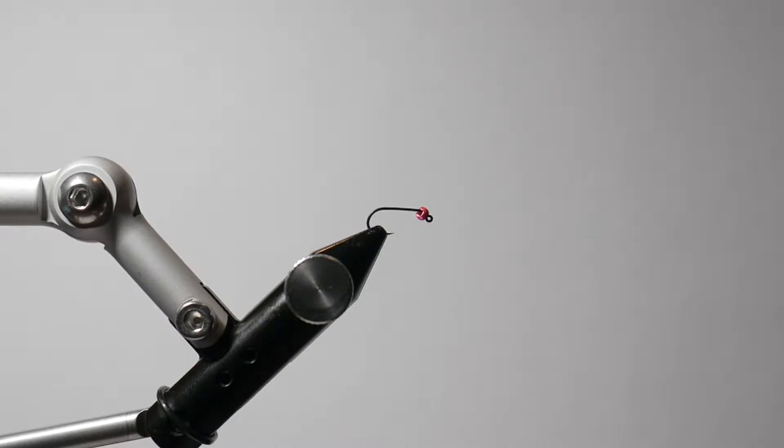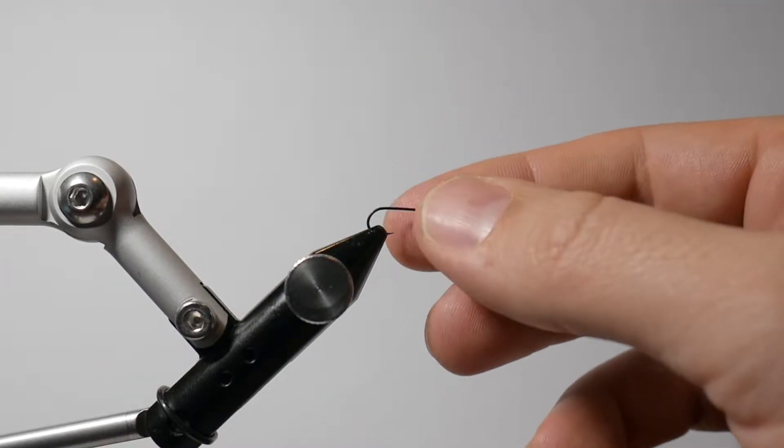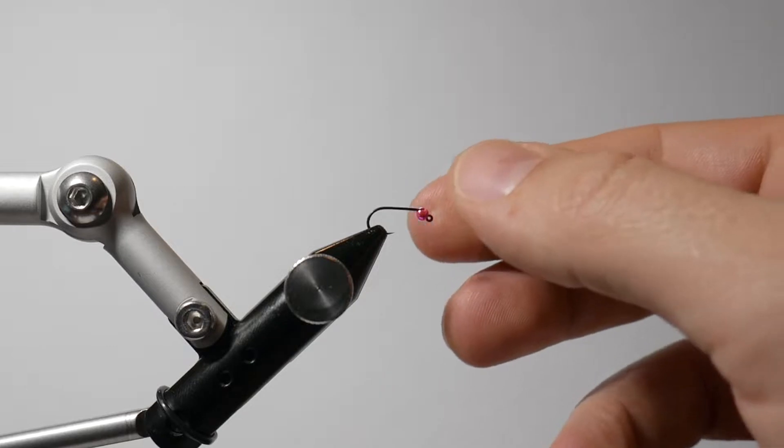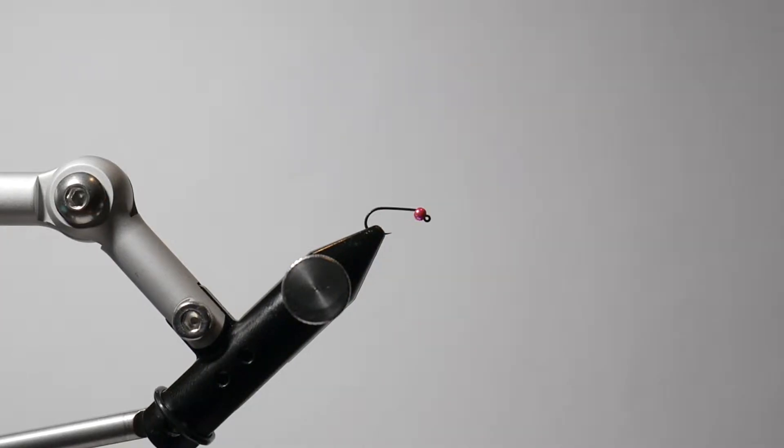I wanted to tie one that was fairly unique in pink because John, who fishes on the channel a lot, he's a big pink fan. So I'm going to start with a Veevus 30M body quill, this is the BQ12, but it's basically just a pink.